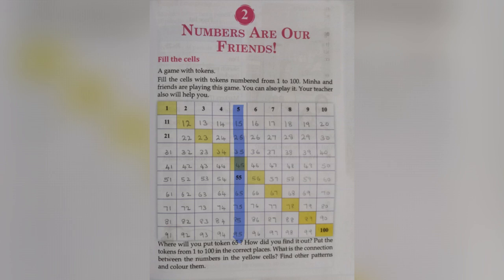Next, let's find the connection between the numbers in the yellow cells. The numbers are 1, 12, 23, 34, 45, 56, 67, 78, 89, and 100.